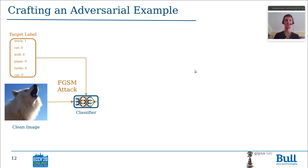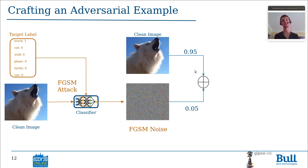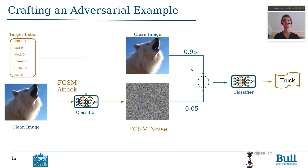Let us consider an attack, for instance the FGSM attack. The adversarial attack tries to exploit the structure of an attacked classifier so as to generate an adversarial pattern. And when this adversarial pattern is added to the original image, we get an adversarial example that tends to make classifiers believe that the adversarial example is not a wolf,